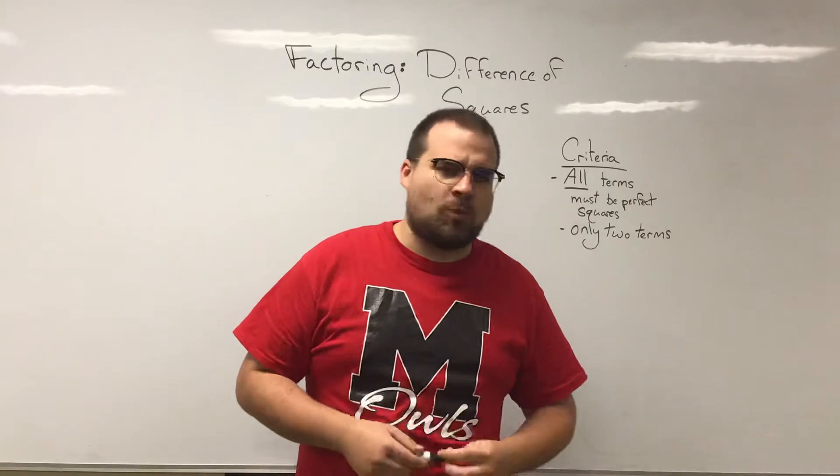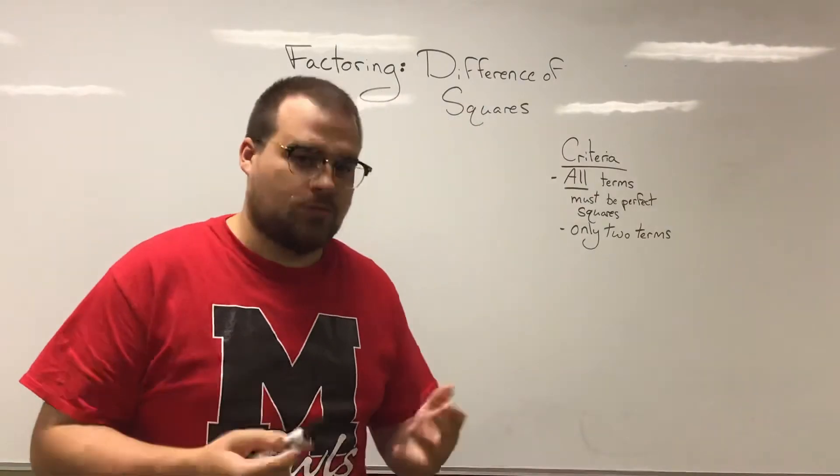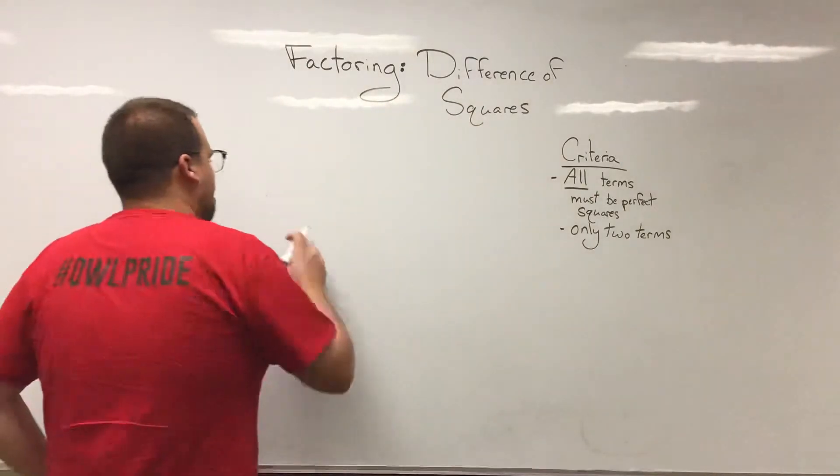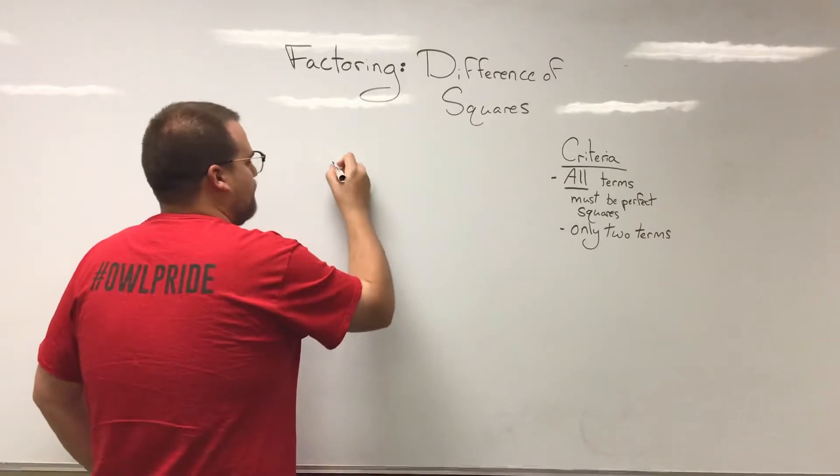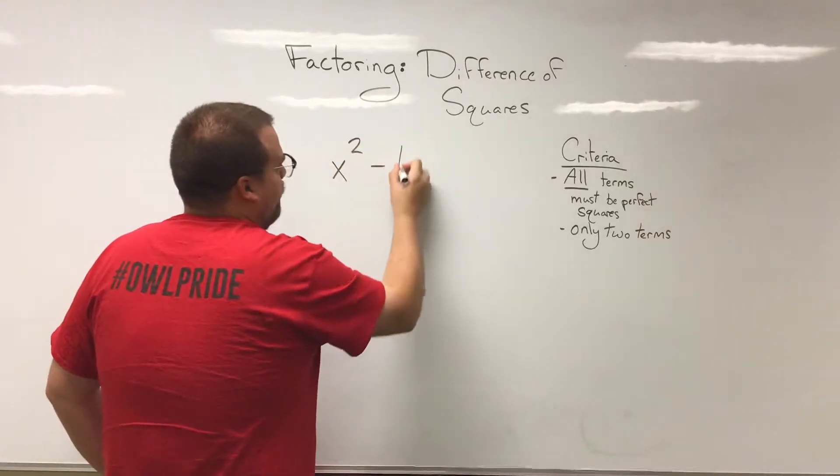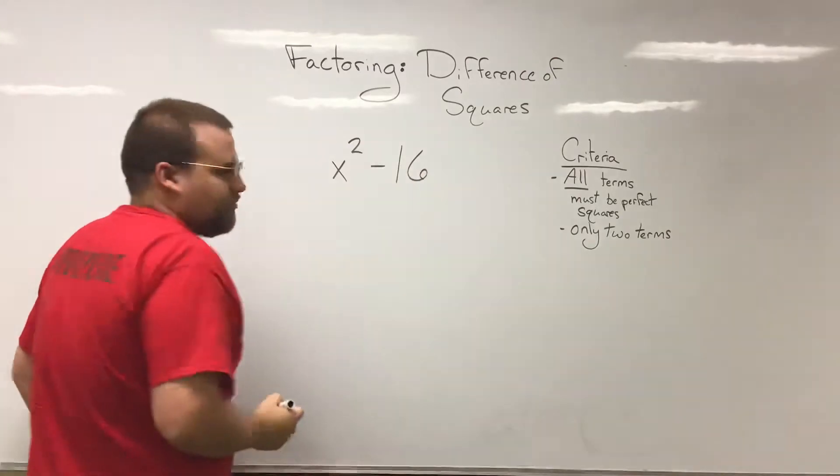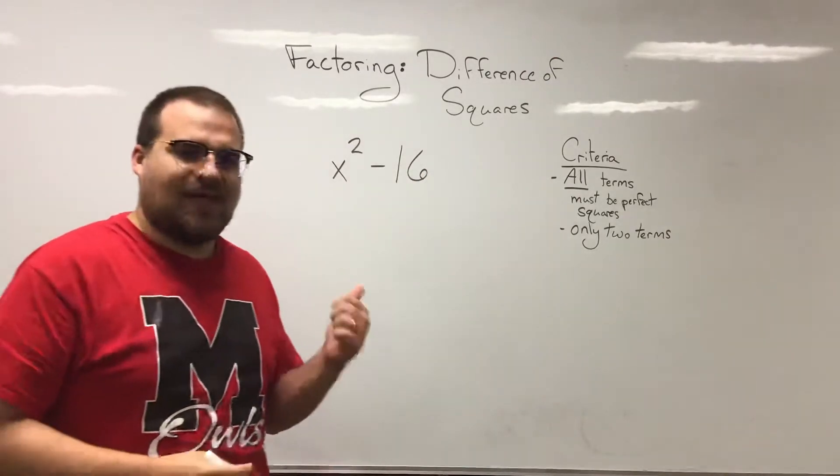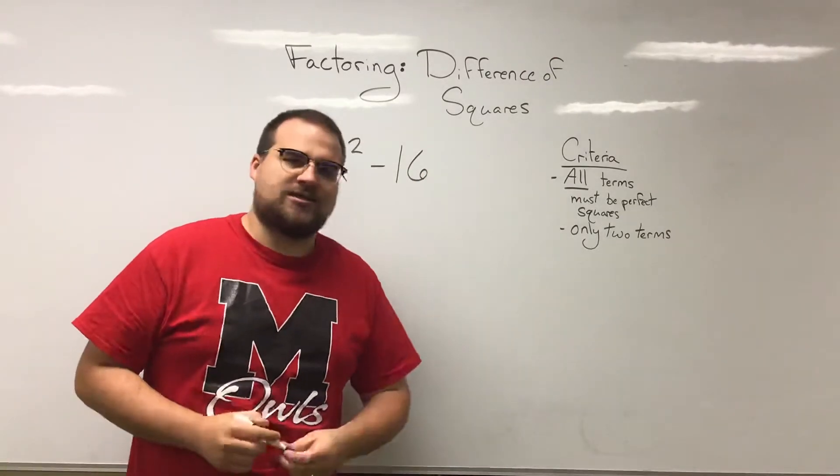So let's take a look at what this actually looks like. Let's say I have something like this. This is kind of our very common version of a difference of squares polynomial: x squared minus 16.